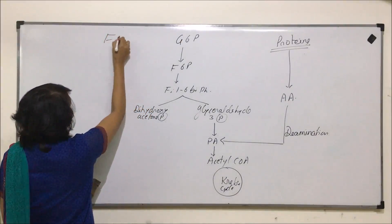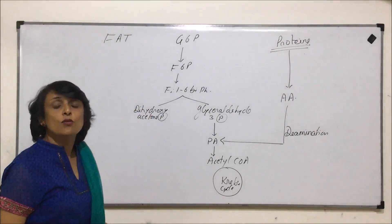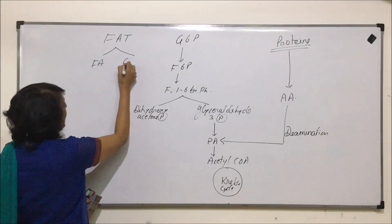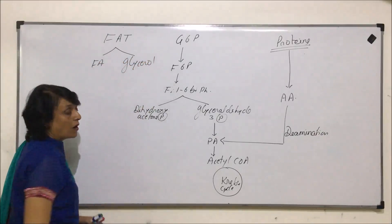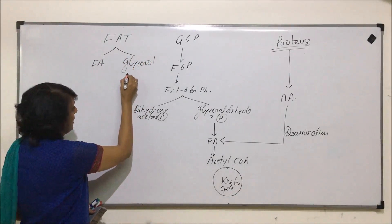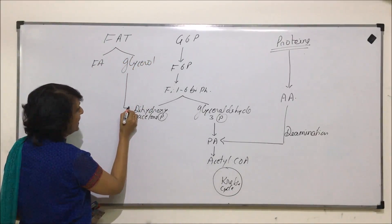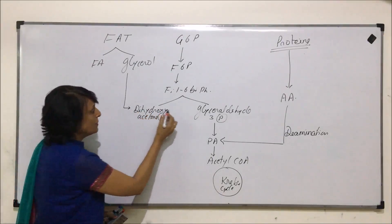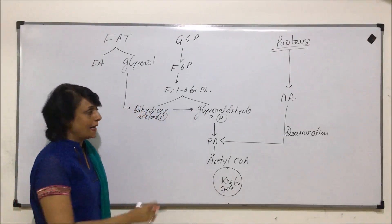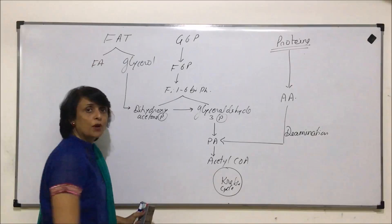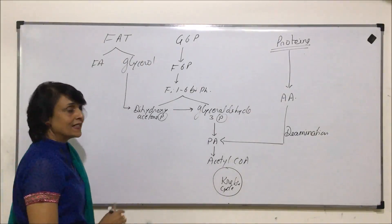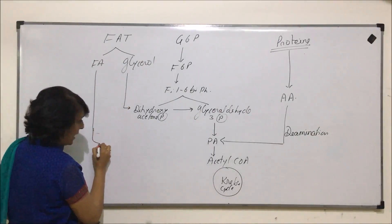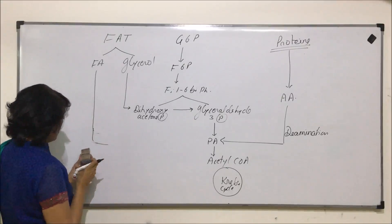The other substrate is fat. When fats dissociate they dissociate into 2 molecules: fatty acids and glycerol. Glycerol joins this pathway at glyceraldehyde 3-phosphate. That means they will first form a 3-carbon compound. Fatty acid after beta-oxidation joins at acetyl coenzyme A.